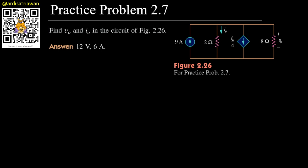Hello, my name is Ardi and we are going to solve Practice Problem 2.7 from Sadiku book. Find v0 and i0. v0 is the voltage across this 8 ohm resistor and i0 is the current that passes through this 2 ohm resistor.